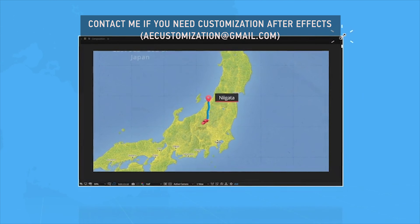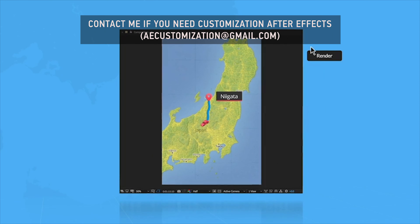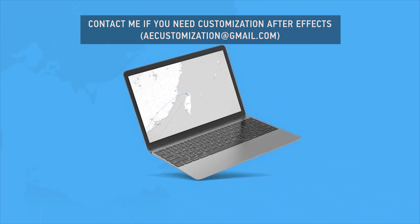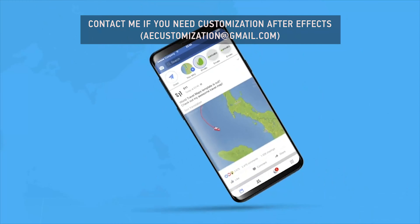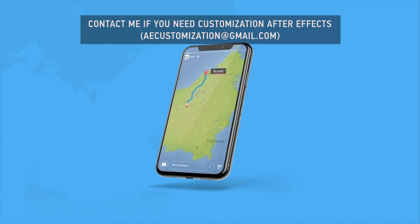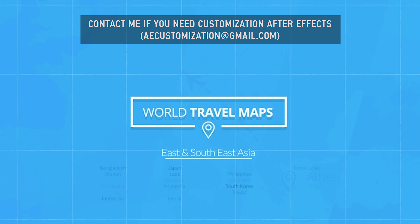All of these comps are fully responsive. So whether you need it in full HD, 4K, square format, or want that vertical look for your Instagram stories, we have you covered. That's World Travel Maps for East and Southeast Asia — helping you tell your stories and taking your video content to the next level.